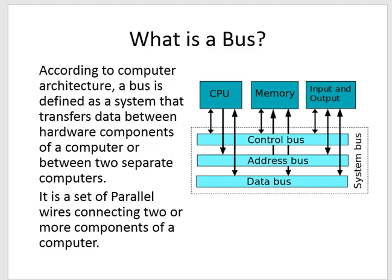You can use the bus to convey information between different bits of hardware—the CPU, memory, and also the input and output which would be things like your monitor or your keyboard. It is a set of parallel wires connecting two or more components of a computer. That's the idea of a bus. Here you've got the control bus, the address bus, and the data bus.